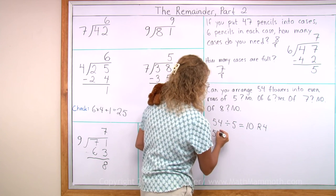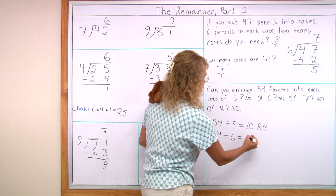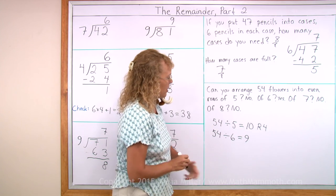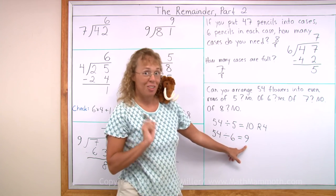And then 54 divided by 6. Okay, I already told you. It was 9. The remainder is 0. And so now rows of 6, I get 9 rows.